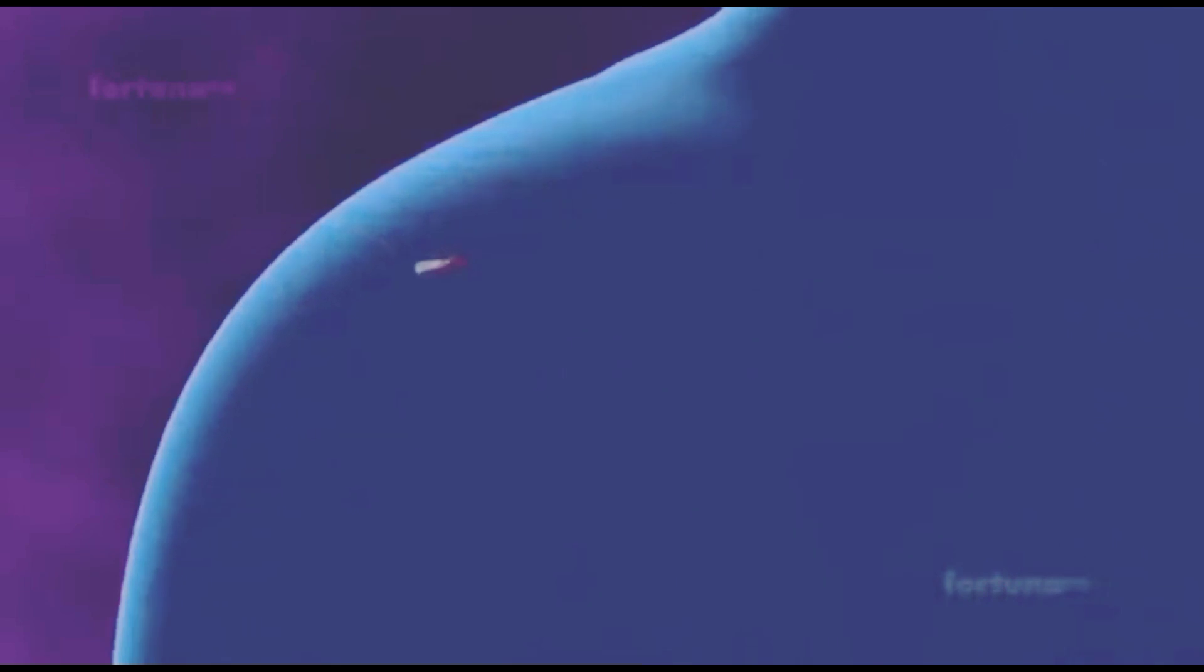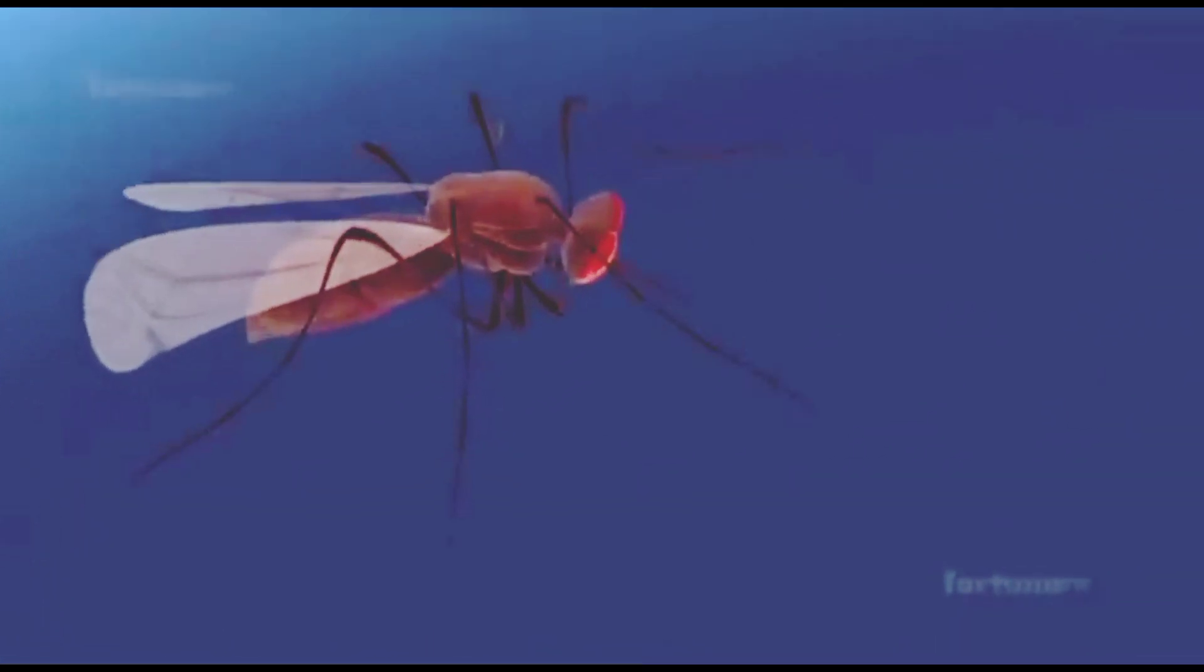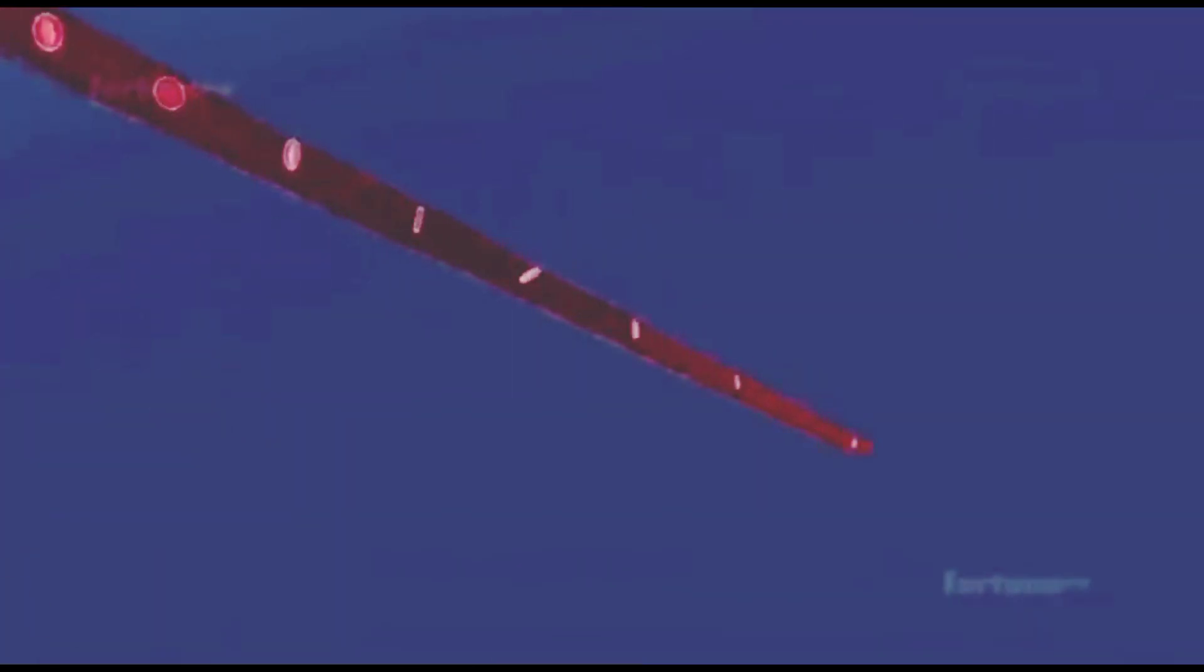Now, let's see how the parasite completes its life cycle in the mosquito. When a female Anopheles mosquito sucks the blood of a malarial patient, the gametocytes will enter the mosquito.